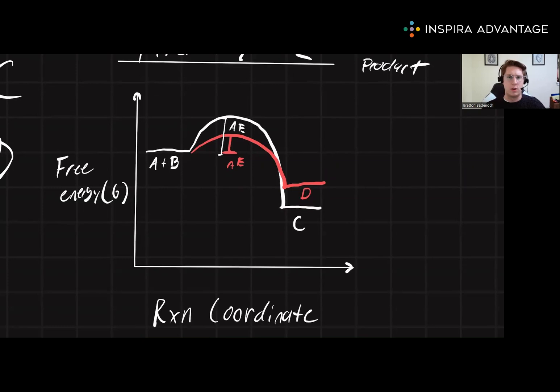Oftentimes on the MCAT, what they're going to do is they'll draw exactly what I drew here. They'll give you this sort of coordinate diagram. And my recommendation is always figuring out what is the thermodynamic product first, because that's the most simple. Thermodynamic is always going to be the lowest one. However, depending on that activation energy, sometimes the thermodynamic product is also the kinetic product.